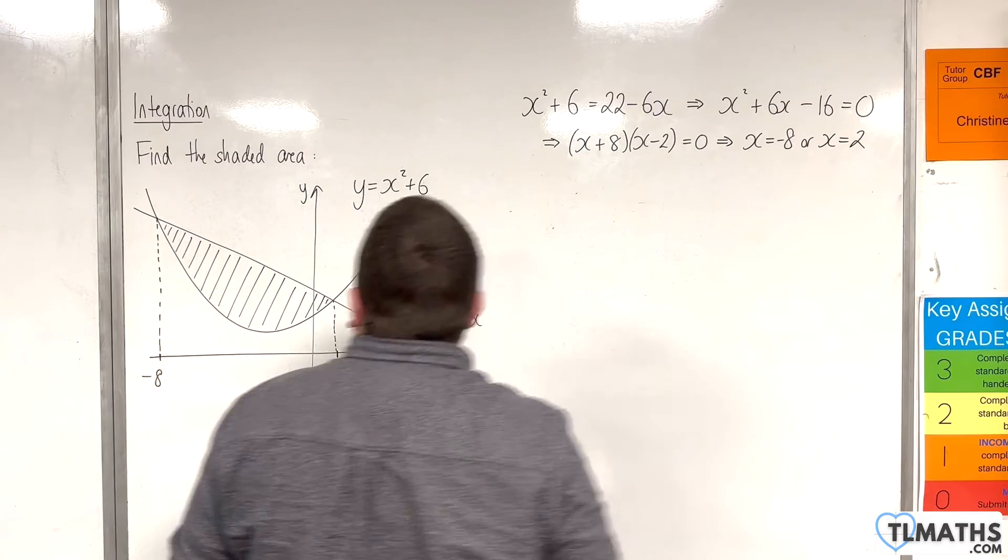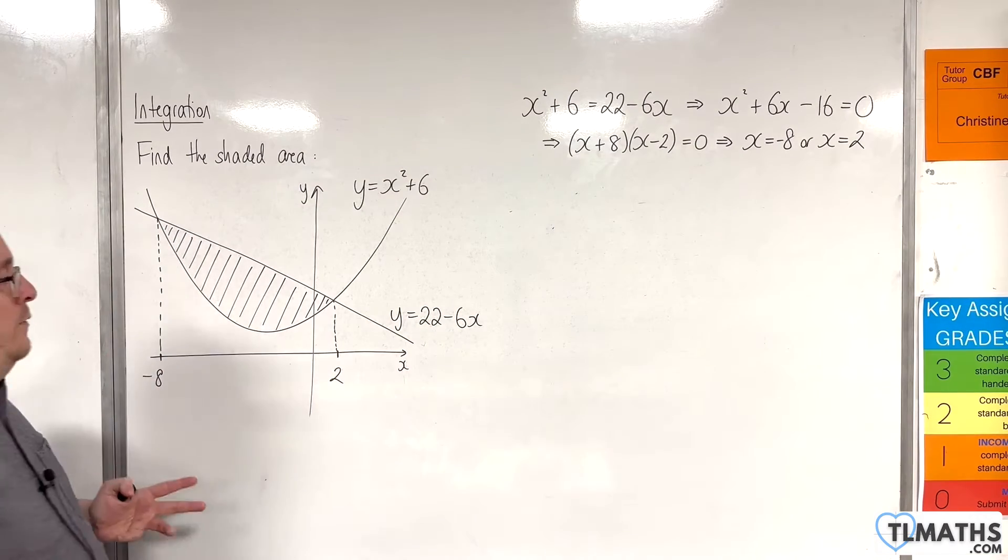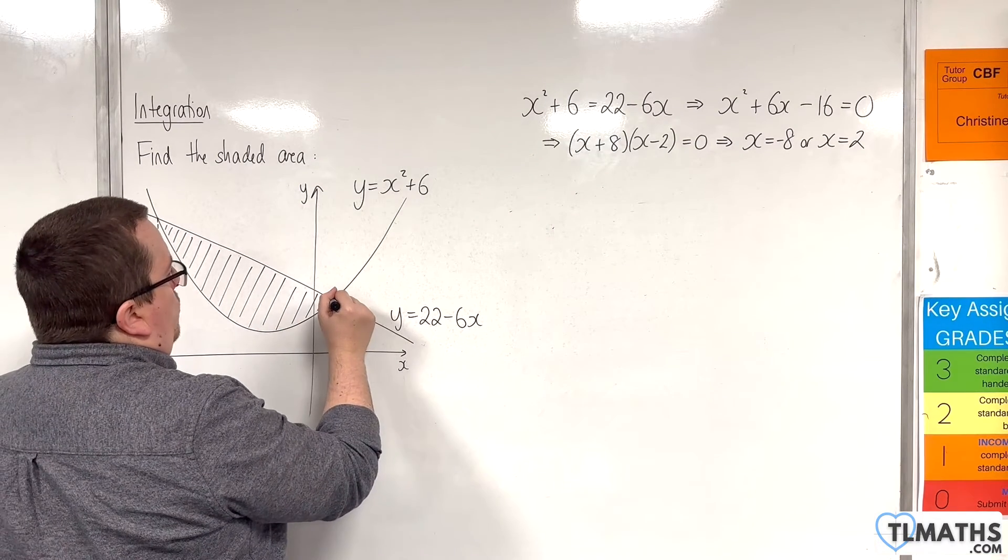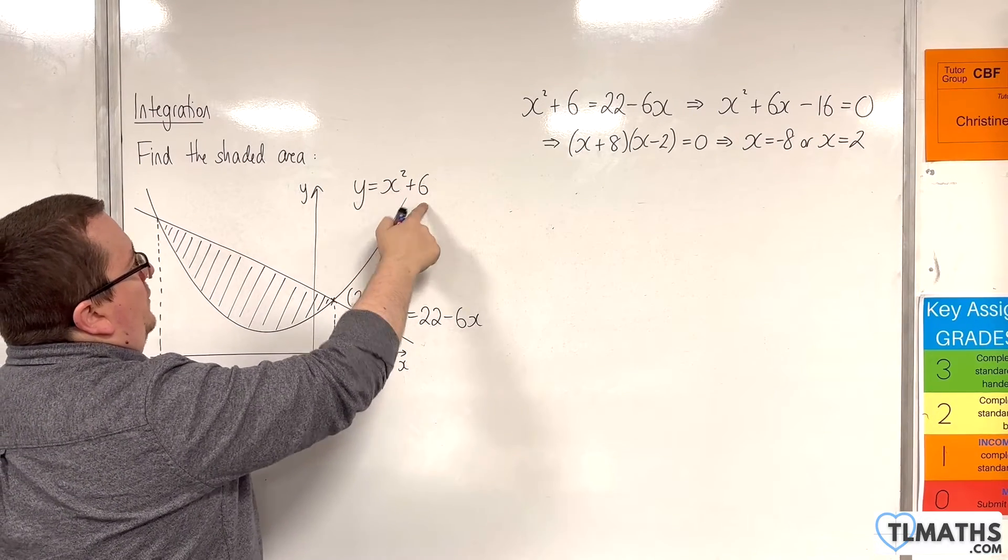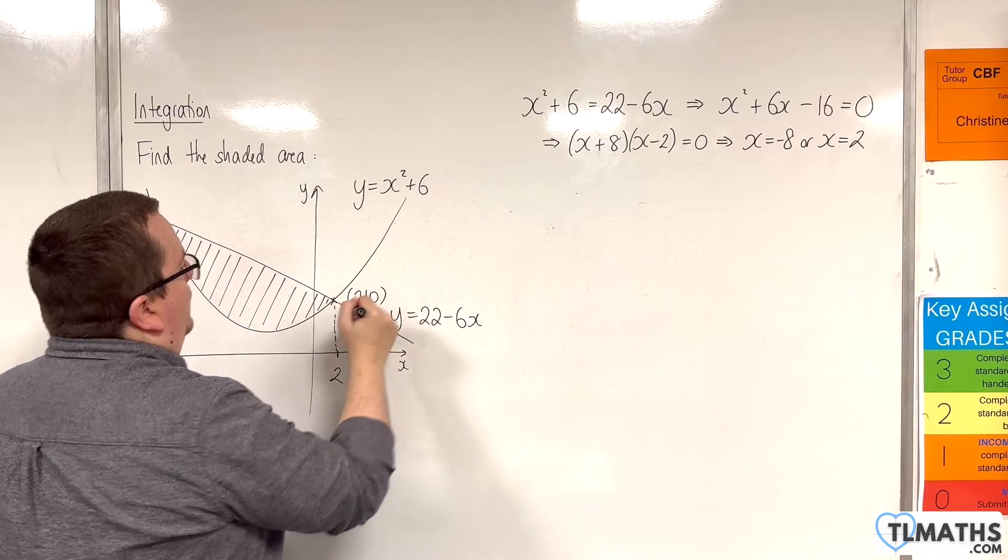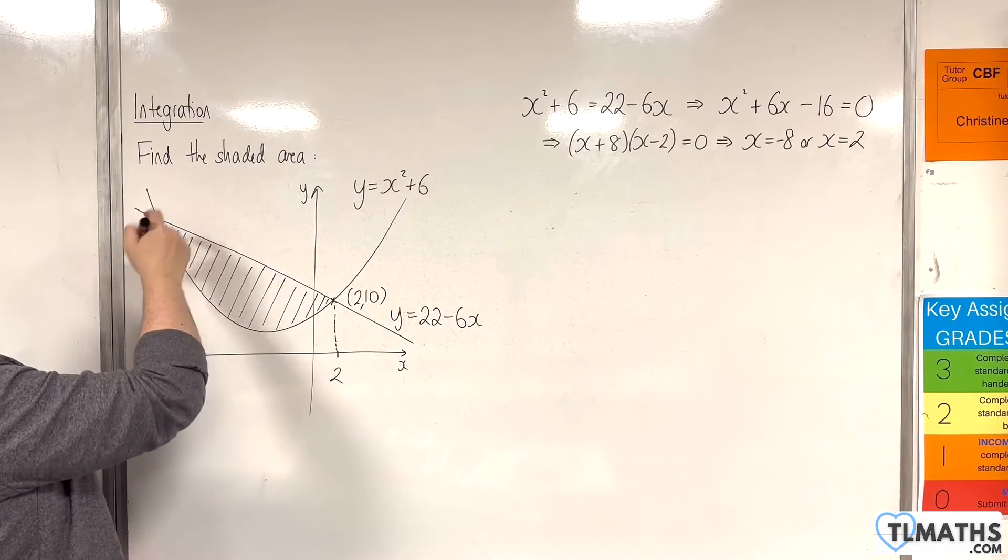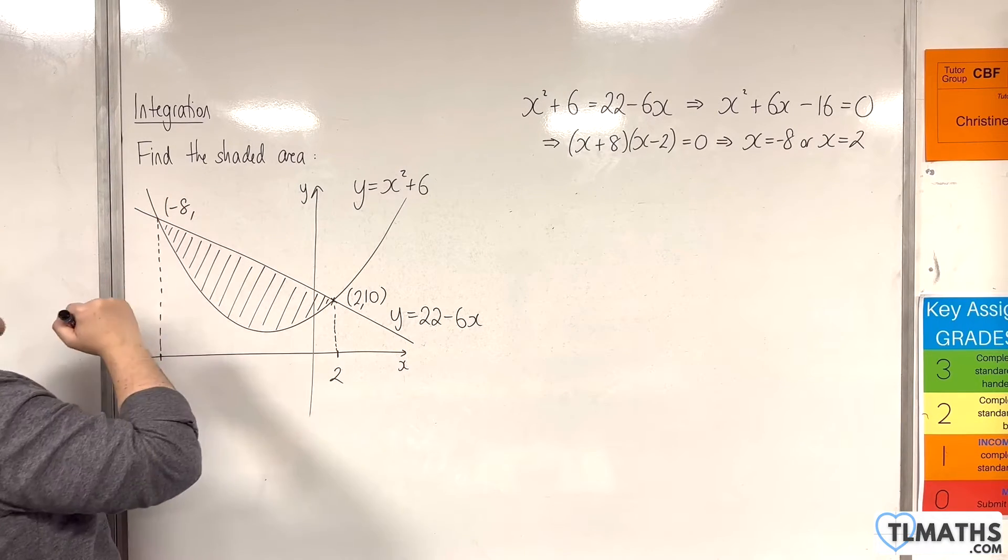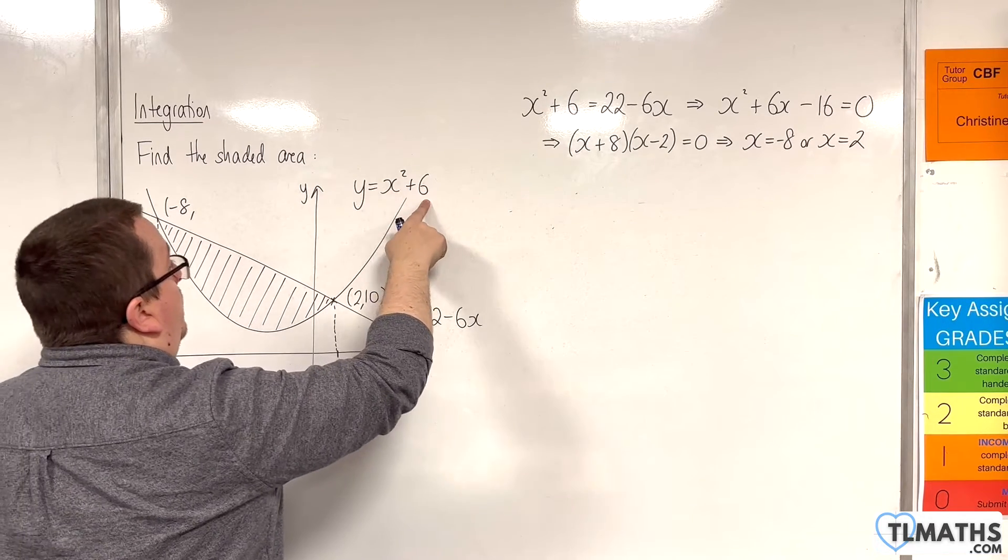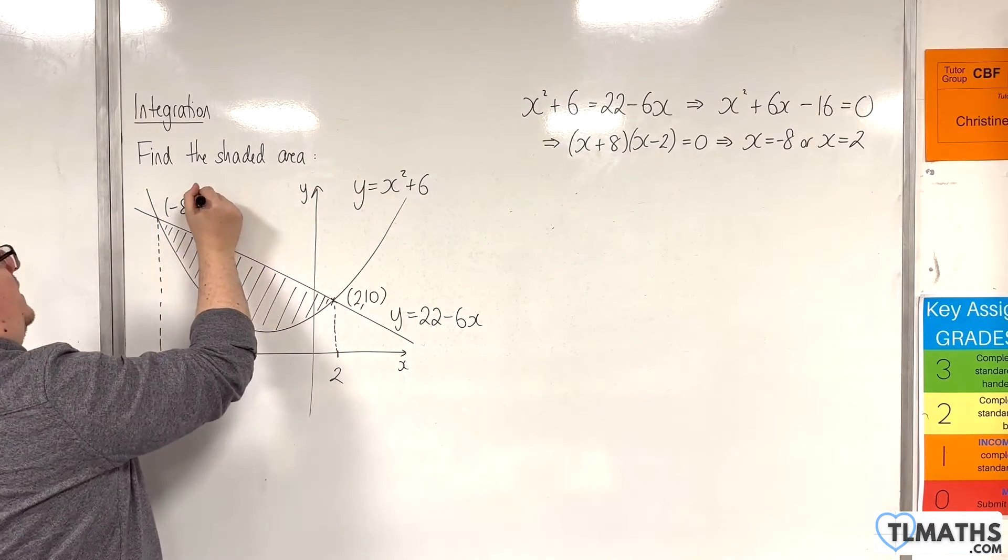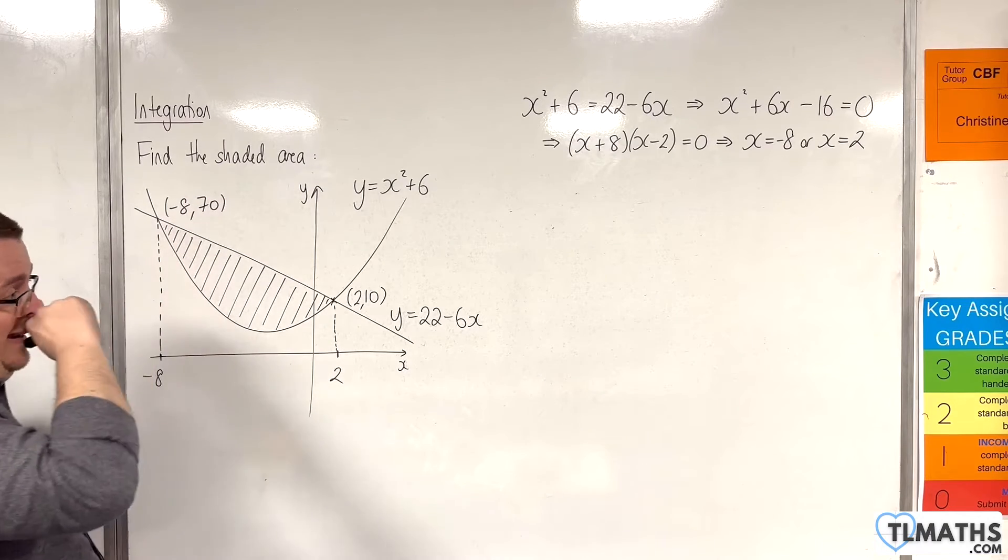Okay, so in order to find the area of the trapezium, I'm going to need to know the heights of these, right? So, when x is 2, this point is 2 and then we've got 2 squared plus 6, so that would be 10. So, that's 2, 10. And this point is minus 8 squared, which is 64, plus 6 is 70. So, minus 8, 70.